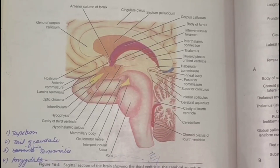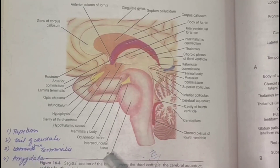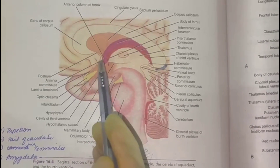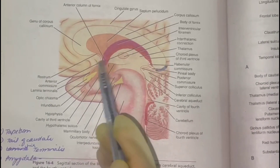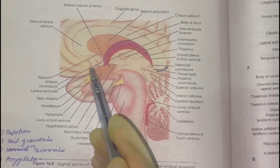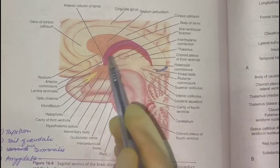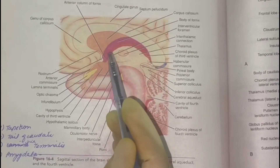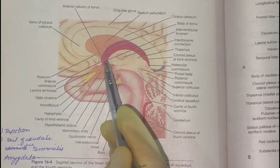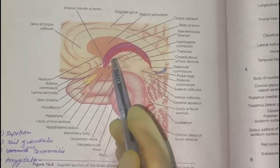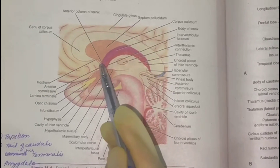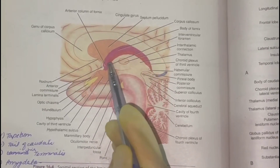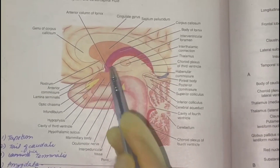The anterior wall of the third ventricle is formed by the anterior commissure, the lamina terminalis, and the anterior column of the fornix. So the anterior wall is formed by these three parts: the anterior commissure, the lamina terminalis, and the anterior column of the fornix.